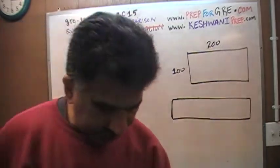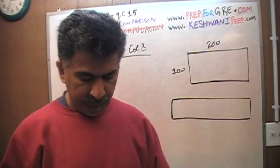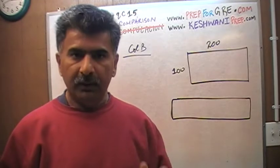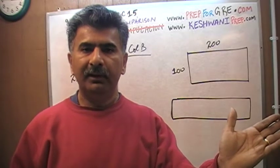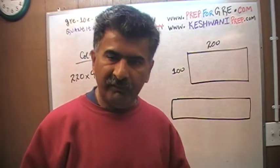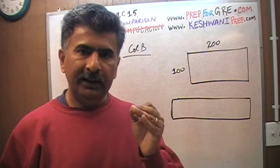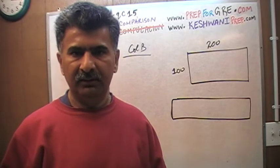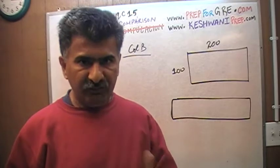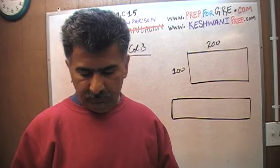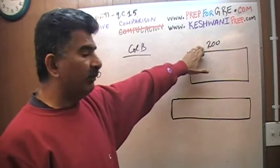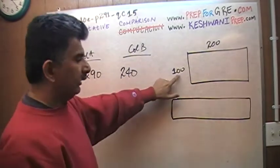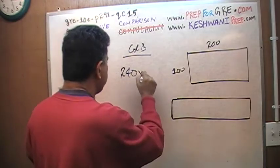In Column B, P happens to be 20. Some people might jump ahead and say a larger percentage increase means a larger area — but let's not jump our gun. One thing I know before finishing is that the answer is not going to be D; it has to be A, B, or C, because we are dealing with solid numbers. If P is 20, then 20 percent of 200 is 40, so the length becomes 240. The width decreases by 20 percent: 100 becomes 80.